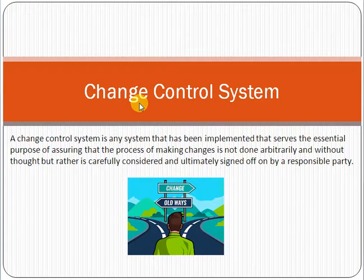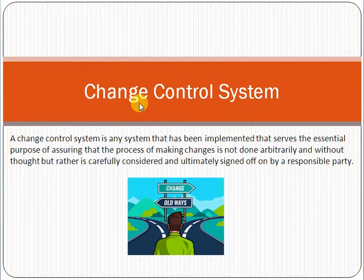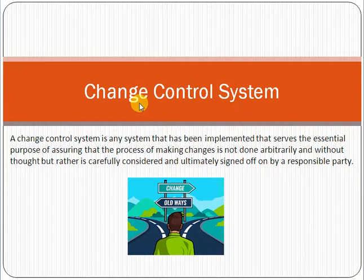The change control system basically ensures that any change going to production requires proper sign-offs and approvals from the authorities, and that all necessary testing and verifications are done before it goes to production — before it is handed over to the customer. This is the core concept of the change control system.